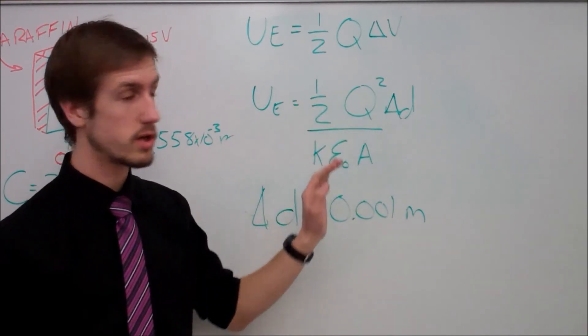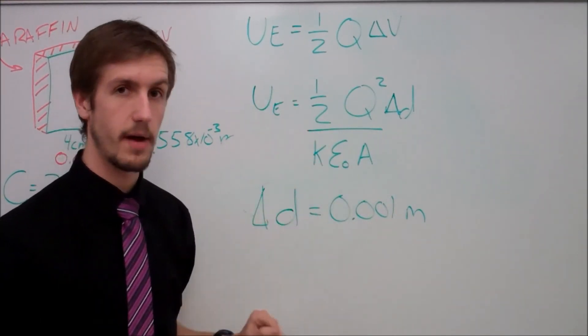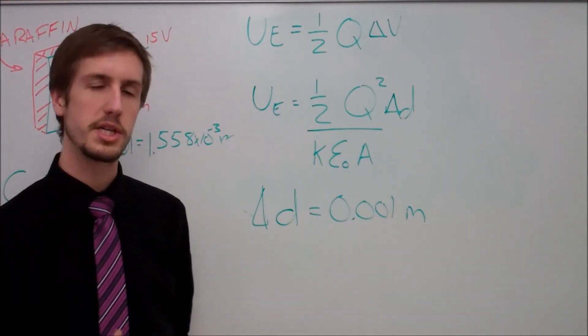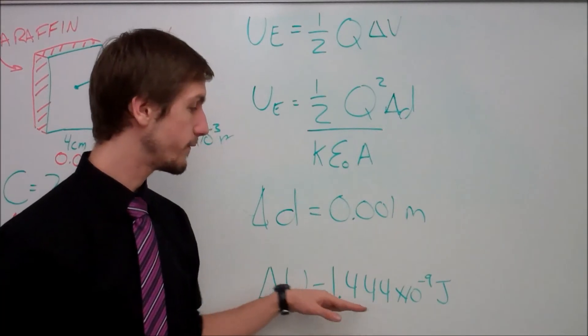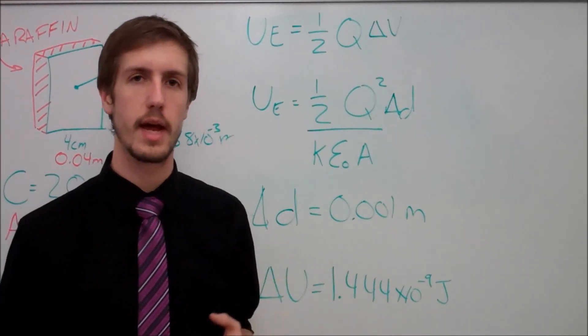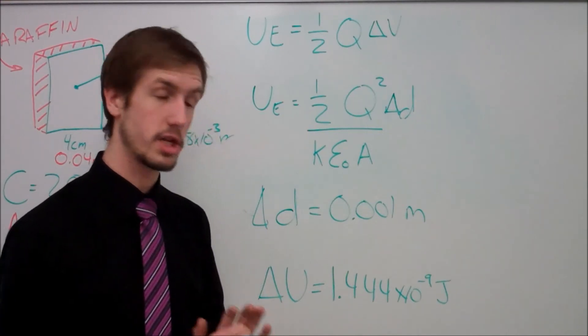My area remains the same, my charge remains the same, and K value remains the same, and all my other constants are fine. So what I ended up getting with my change in my potential energy is this, where I ended up getting 1.444 times 10 to the negative 9th joules of energy. That's how much work I'd have to do to get my two plates farther apart.